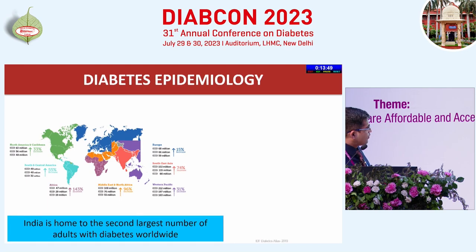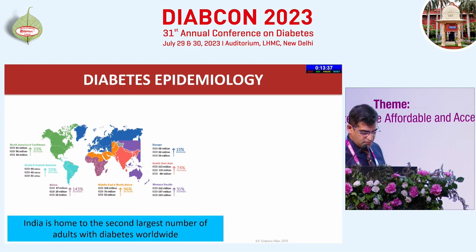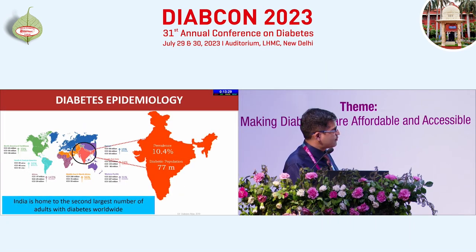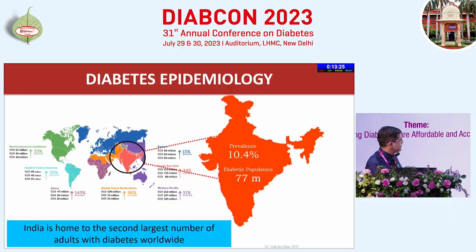When we particularly talk about Southeast Asia, look at the numbers — it's a humongous increase in the last 10 years and it's believed that even in the next 30 years the rise is going to be staggering. Specifically talking about India, the prevalence of diabetic individuals in our country is about 10.4% and the diabetic population is estimated at about 77 million. India is home to the second largest population of adults with diabetes worldwide.